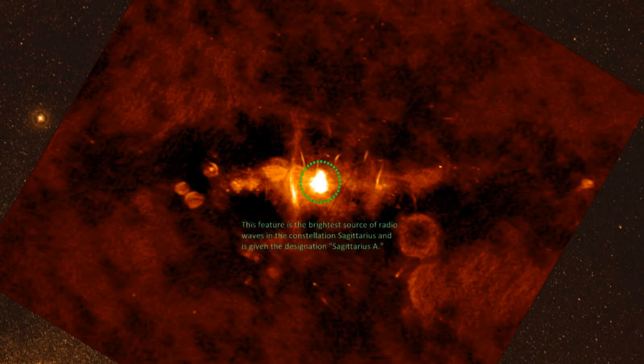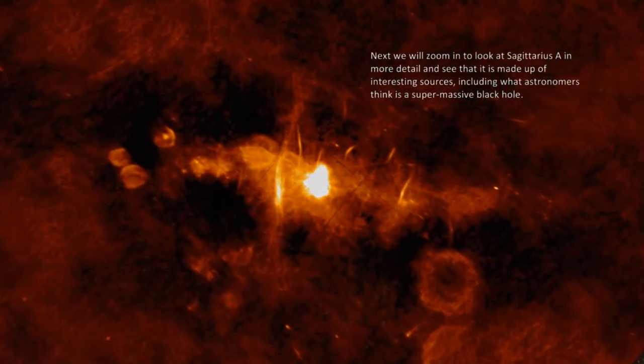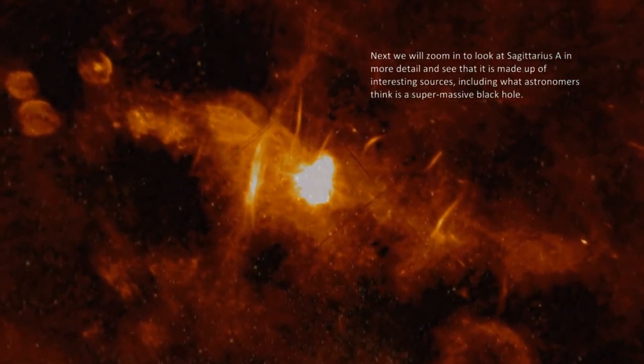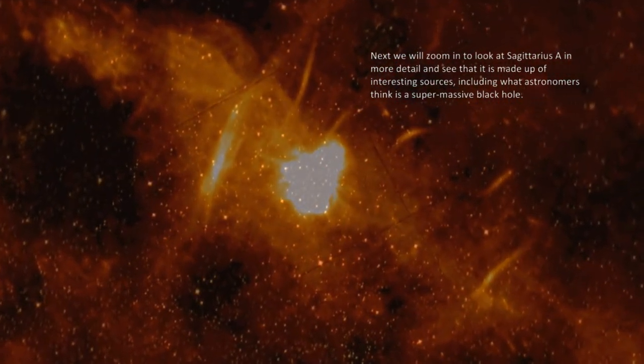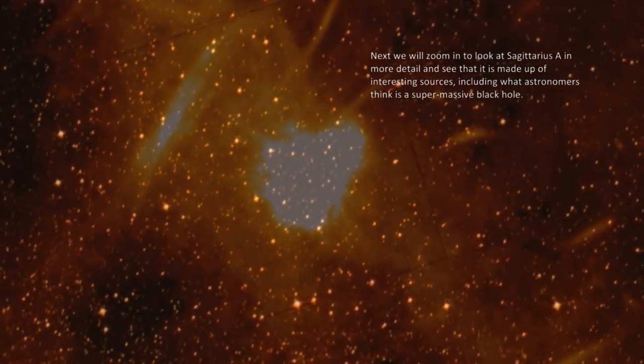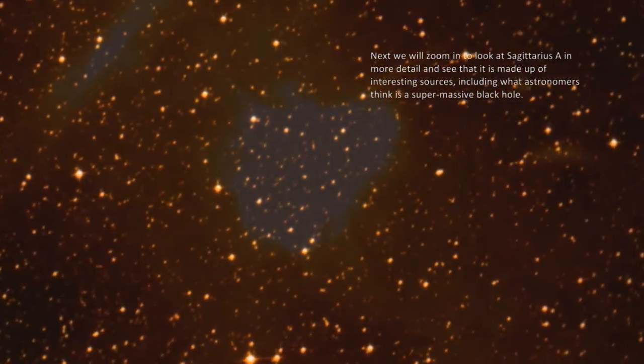This feature is the brightest source of radio waves in the constellation Sagittarius, and is given the designation Sagittarius A. Next, we will zoom in and look at Sagittarius A in more detail, and see that it is made up of interesting sources, including what astronomers think is a supermassive black hole.